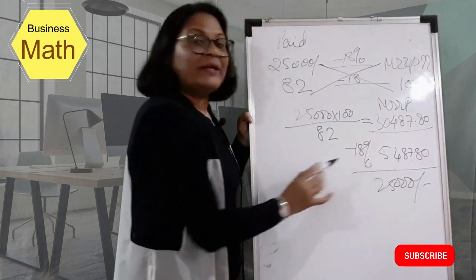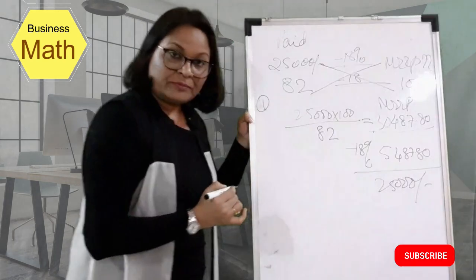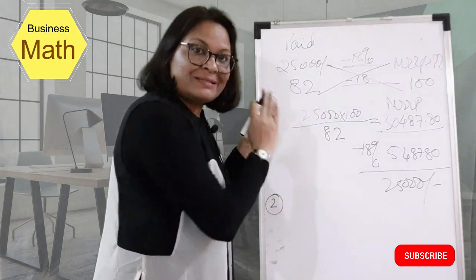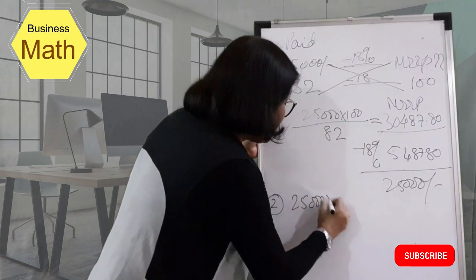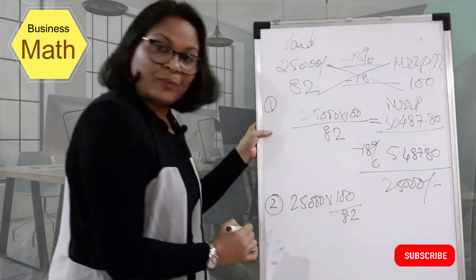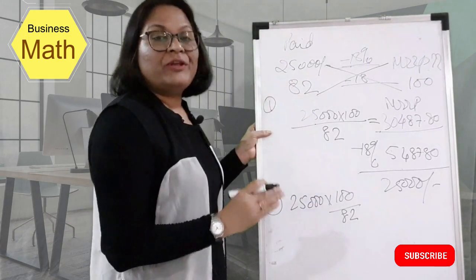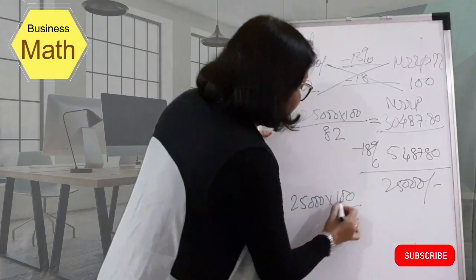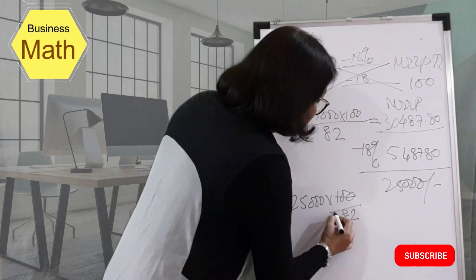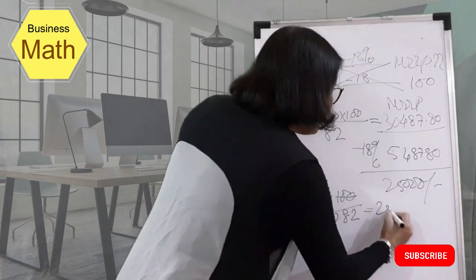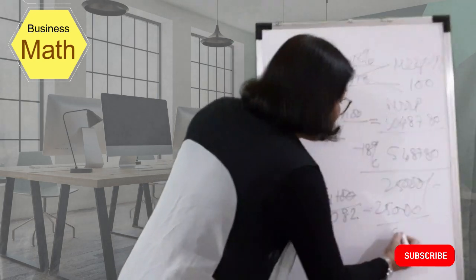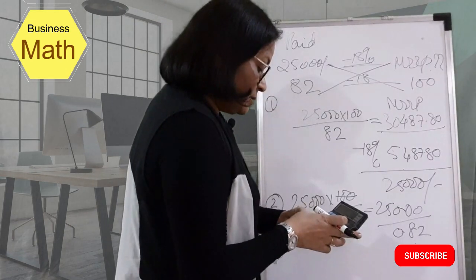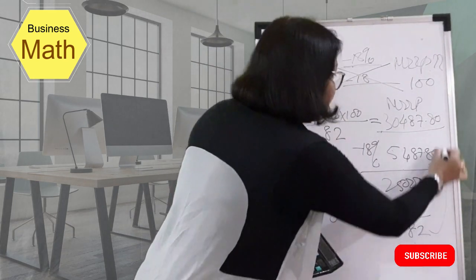Now we will understand another method — Technique 2. We rewrite the equation: 25,000 × 100 ÷ 82. When you divide a number by 100 and remove two zeros, you can put a decimal, so 82 ÷ 100 becomes 0.82. This means you simply divide 25,000 ÷ 0.82, and the answer is the same — 30,487.80. This shortcut saves you from doing the full calculation every time.